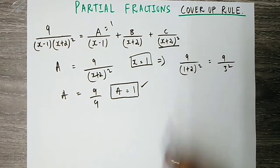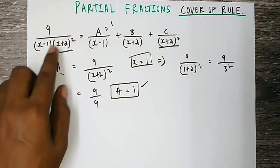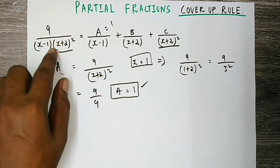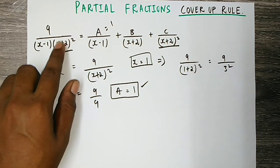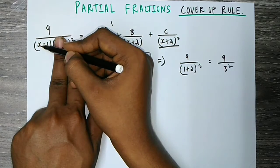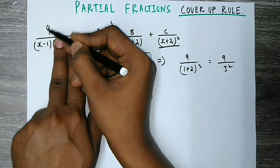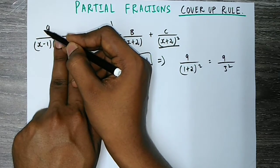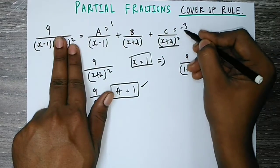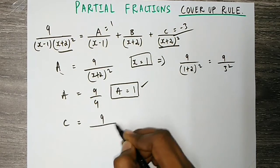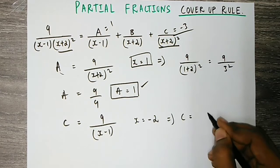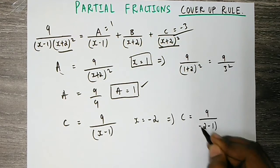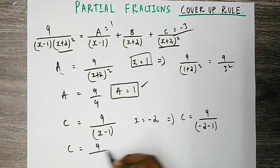Now for C: x plus 2 equals 0 means x equals minus 2. We get 9 divided by (x minus 1), substituting x equals minus 2. That gives 9 divided by (minus 2 minus 1), so 9 divided by minus 3. Therefore C equals minus 3.